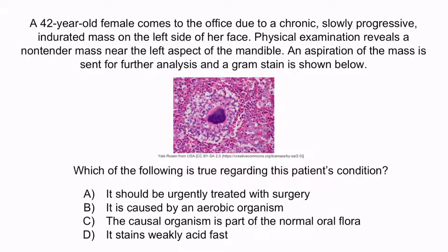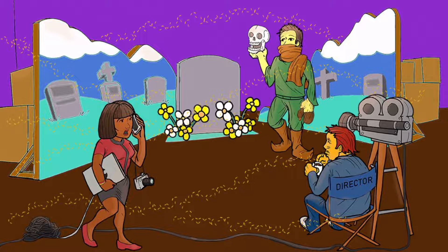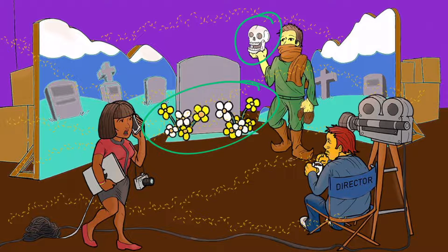From the question stem, hopefully you noticed that this patient has a cervicofacial abscess affecting the mandible, based on the non-tender mass near the left aspect of the mandible. The picture was probably a dead giveaway — recall that the image is a gram stain of Actinomyces, and the center of the image shows a sulfur granule. Therefore, the correct answer is C: the causal organism is part of the normal oral flora. Recall that the flowers along with the skull and open mouth should help you remember that Actinomyces is part of the normal oral flora and can cause cervicofacial disease.